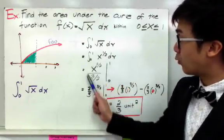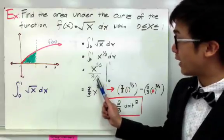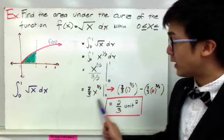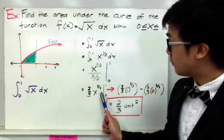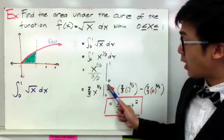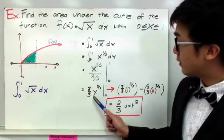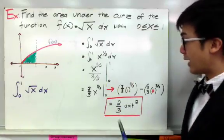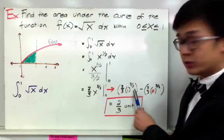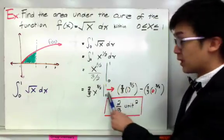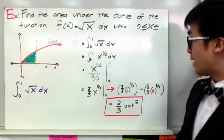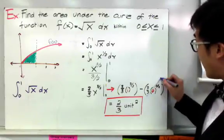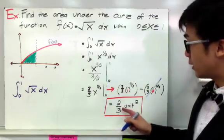We can further simplify our function so we can easily substitute our values into 2 thirds x raised to 3 over 2 from 0 to 1. To evaluate the area under this notation, we simply need to substitute our upper limit through x subtracted to the same function, but this time you will substitute the value of the lower limit, which is 0. That is why I have 2 thirds 1 raised to 3 over 2 minus 2 thirds times the lower limit of 0 raised to 3 over 2. When we multiply 2 thirds to 0, this will cancel out, so we'll end up with 2 thirds times 1, which is equal to 2 thirds.